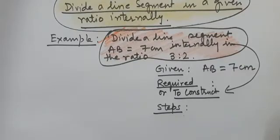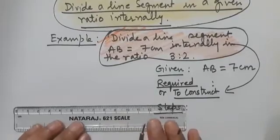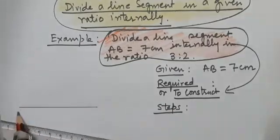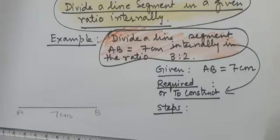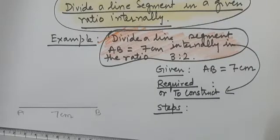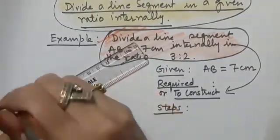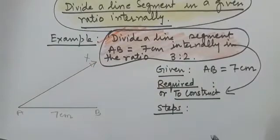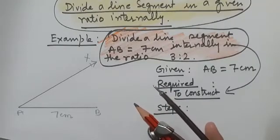Step 1 is to draw the line segment AB equal to 7 centimeters. Here we have taken AB which is 7 centimeters, with endpoints A and B. Like we did in the previous construction, we make an acute angle by drawing ray AX, so that angle XAB is less than 90 degrees.